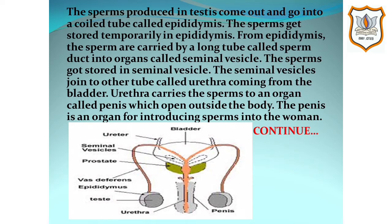The sperms formed in testes come out and go into a coiled tube called epididymis, as you can see in the picture. The sperms get stored temporarily in epididymis. From epididymis, the sperms are carried by a long tube called sperm duct into organs called seminal vesicles. The sperms get stored in seminal vesicles.